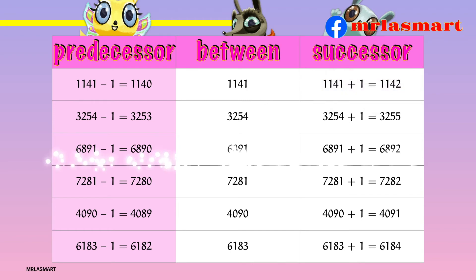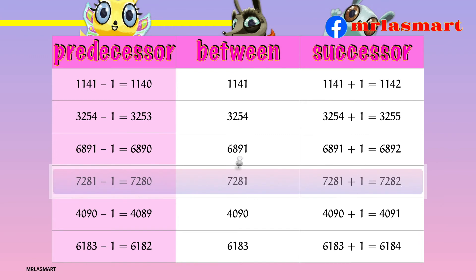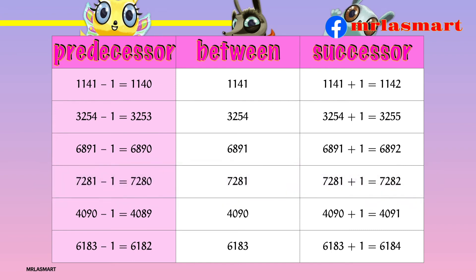Let's take two examples. Our first example is 7,281. After subtracting one from it, we get 7,280 as its predecessor. And after adding one to it, we get 7,282 as its successor.